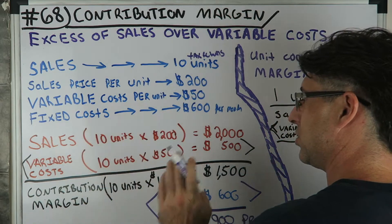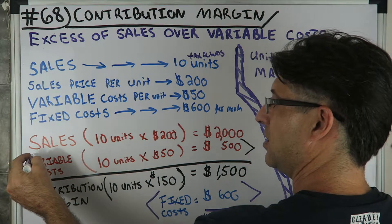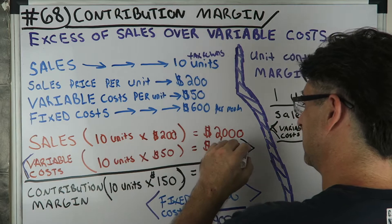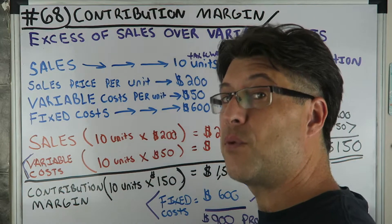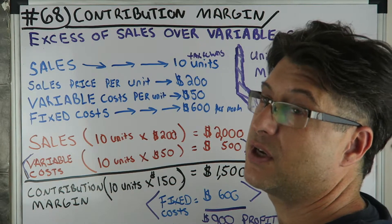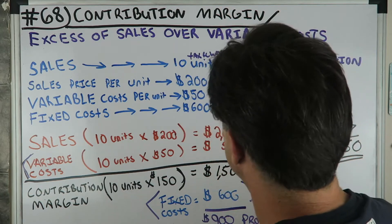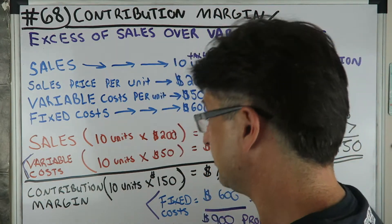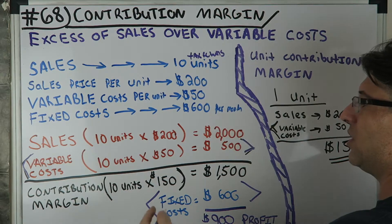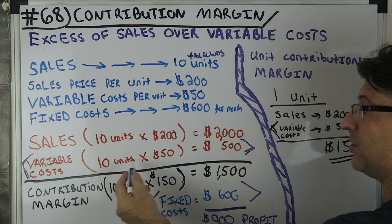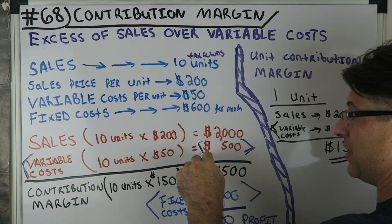Let's get the contribution margin. Total sales: 10 units times $200 is $2,000 in total sales, minus our variable costs — and that gives us our contribution margin. Variable cost for 10 tax returns at $50 each is $500. So you subtract $500 from $2,000 and you get $1,500.